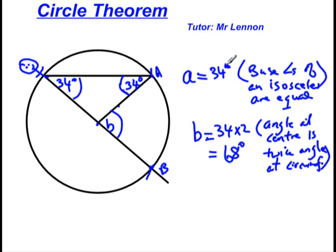Don't forget your degree symbol — it's a little tiny circle, not as big as a zero. All right, here's another way we can find angle B. Let's see how we can find that another way.